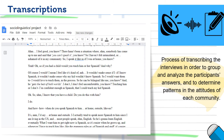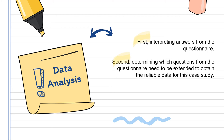We proceeded to transcribe the interviews to analyze and determine patterns in attitudes of each community. The questionnaires' answers obtained supported our participants' characteristics criteria for selection, although some of the questions did not give us further information. Therefore, we determined which questions needed to be extended to obtain reliable data. The interviews supported our research questions — that there are attitudes towards the heritage language.